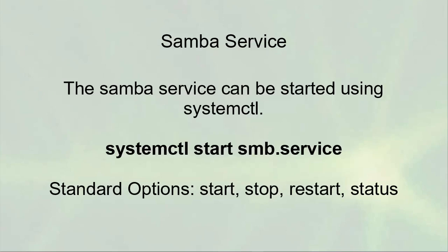The Samba service can be started using the systemctl command — just use systemctl start smb and it will start the Samba server. You can also stop, restart, and check status. If you want it to start at boot time, just use systemctl enable smb.service to enable it.